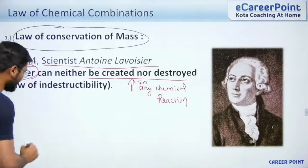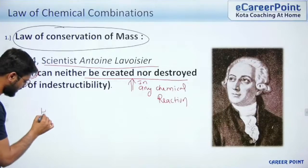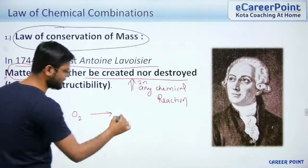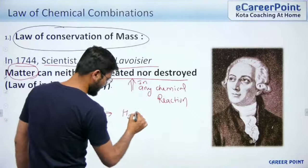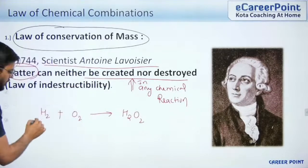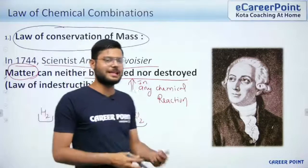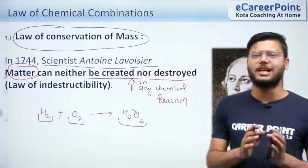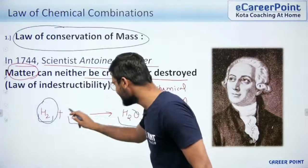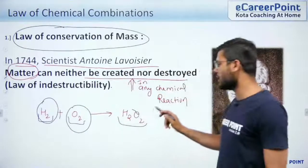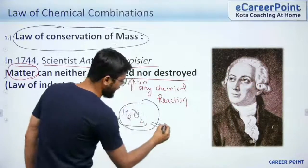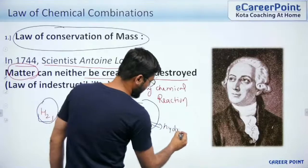Let's say I have the reaction: hydrogen reacting with oxygen, giving H2O2. At this moment you may not know what this is, but you have a little idea — this is hydrogen gas, this is oxygen gas, and what we are making is hydrogen peroxide.